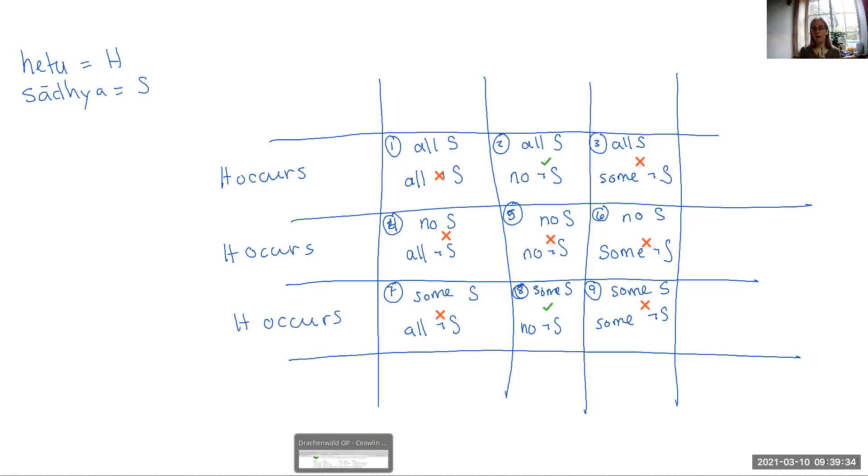Something that might be an interesting exercise for you to do is to go back to the video on the pseudo-justifications and looking at things that look like they are good Heitu, but end up not being because they are deficient in some way, and try to figure out where these pseudo-justifications fit in in the other cells of the Wheel of Reasons. Another good exercise, just so that you can kind of get a sense of how all of this is supposed to fit together, is come up with examples of H's and S's that fit each of these categories.